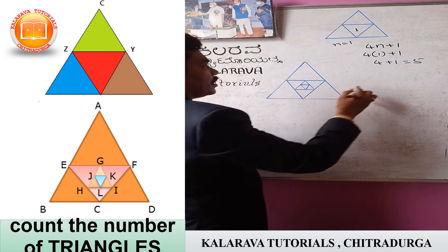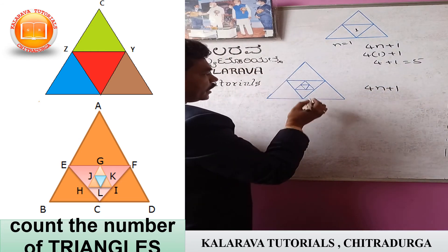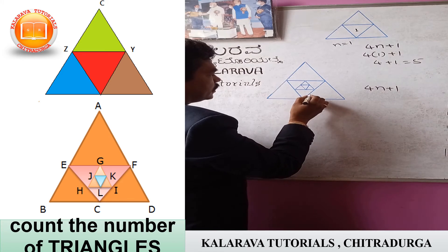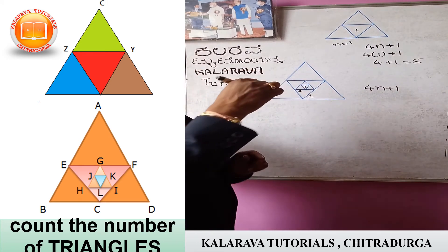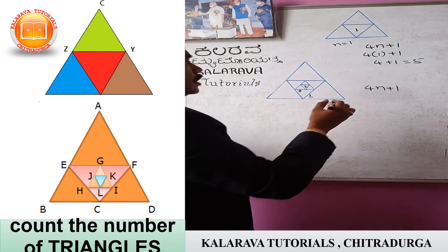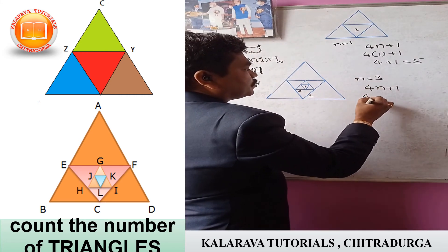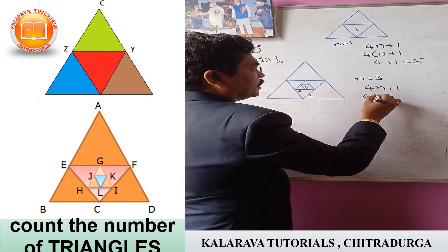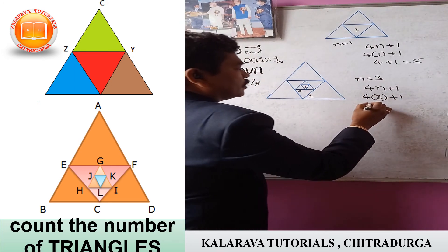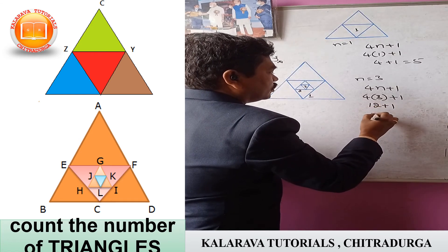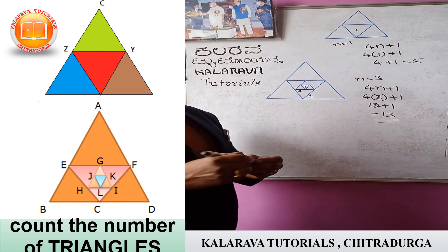Here we apply the same formula 4n plus 1 for this also. You count the embedded triangles — this one is 1 triangle and 2 triangle, there are 3 triangles embedded inside the triangle. So n equals 3. We substitute the value of n as 3: 4 into 3 is 12, 12 plus 1 equals 13. There are 13 triangles in this figure.